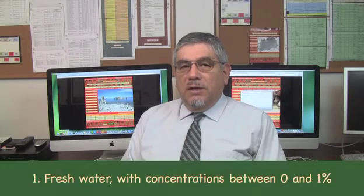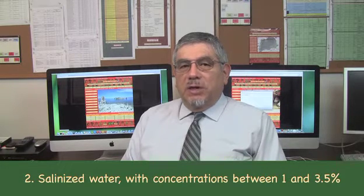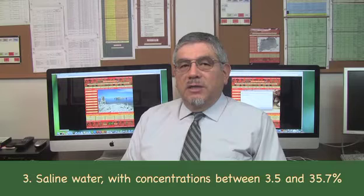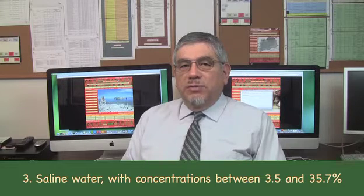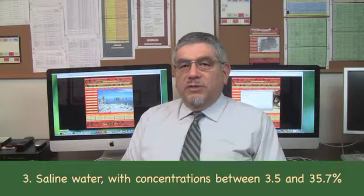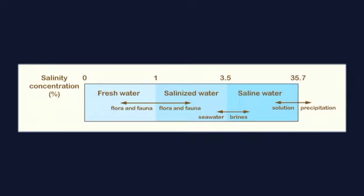Depending on its salinity concentration, the quality of groundwaters falls into three categories. One, freshwater, with concentrations between 0 and 1%. Two, salinized water, with concentrations between 1% and 3.5%. And three, saline water, with concentrations between 3.5% and 35.7%. The 1% limit separates freshwater flora and fauna from saltwater flora and fauna. The 3.5% limit is the salinity of seawater. The 35.7% limit is the saturation concentration of sodium chloride in water at 20 degrees Celsius.